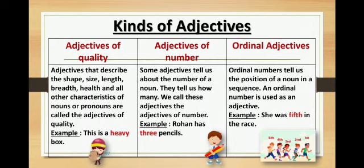Now, the third is ordinal adjectives. Ordinal numbers tell us the position of a noun in a sequence. An ordinal number is used as an adjective. For example: she was fifth in the race. So ordinal numbers tell us the position of a noun in a sequence, and an ordinal number is used as an adjective.